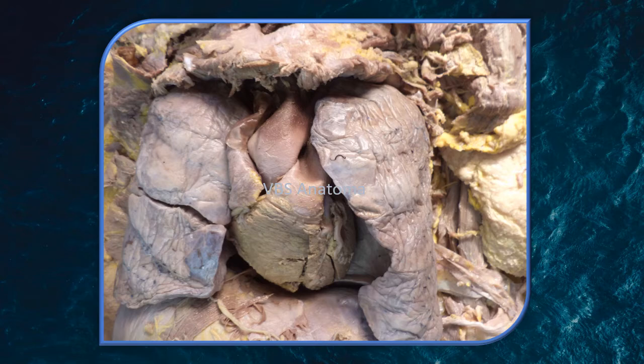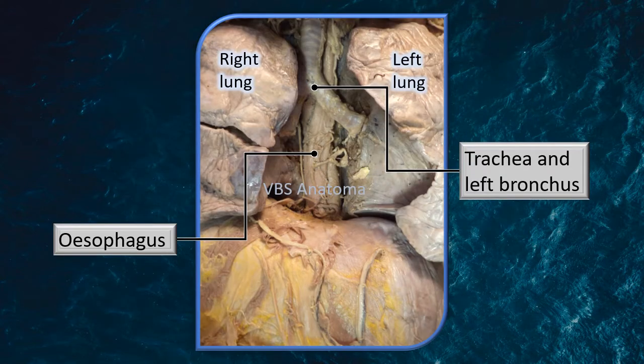This is an actual cadaver specimen. The anterior wall of the thorax has been removed to show the lungs and the heart. Right lung, left lung and the heart are highlighted with labels. This is more or less the same as the previous image except that the heart has been removed, to show that there are certain structures behind the heart also — for example, right behind the heart, the trachea and the left bronchus, and further behind it, the oesophagus.